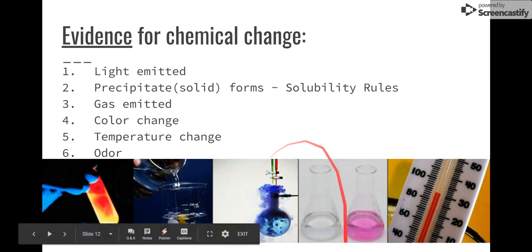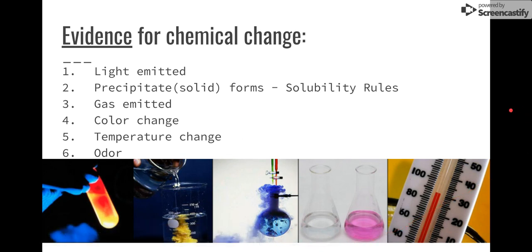If gas is emitted, so right here, if we mix two chemicals and it emits bubbles or gas, think like baking soda and vinegar volcanoes, that's evidence for chemical change. The gas had to be created or had to be made from the particles, so they rearranged and probably created something like carbon dioxide or oxygen or hydrogen or some other type of gas.